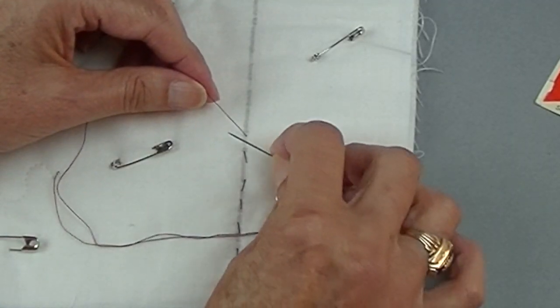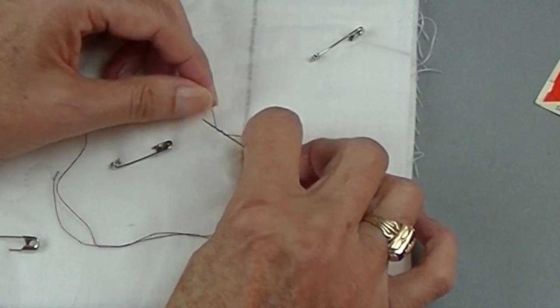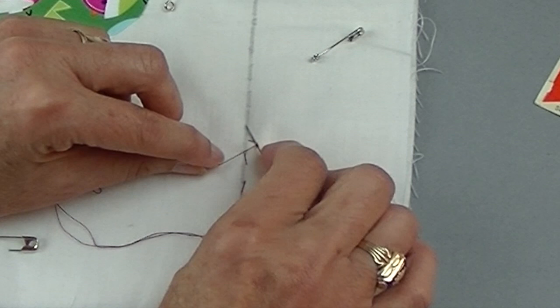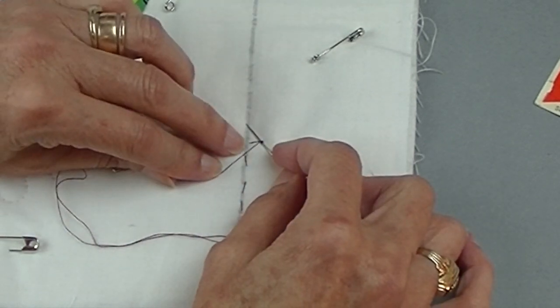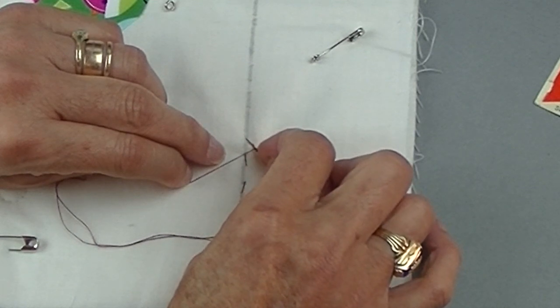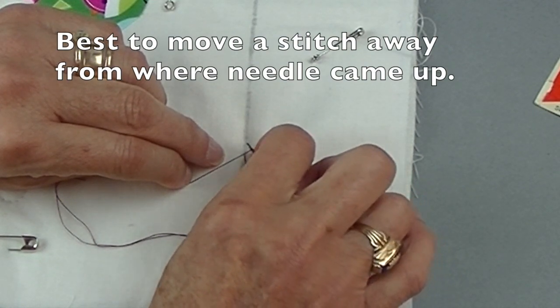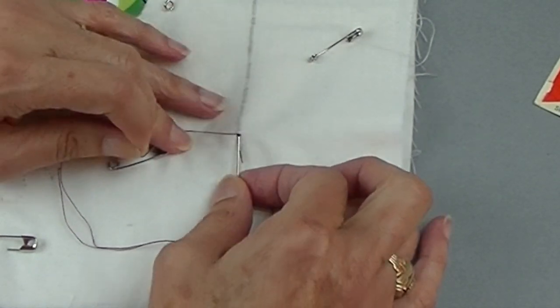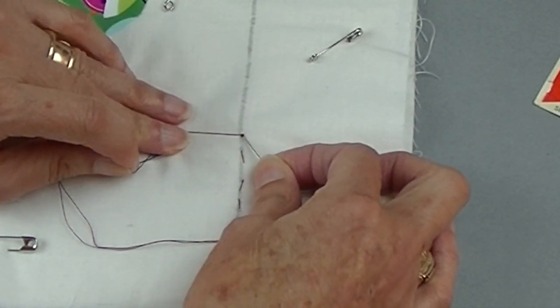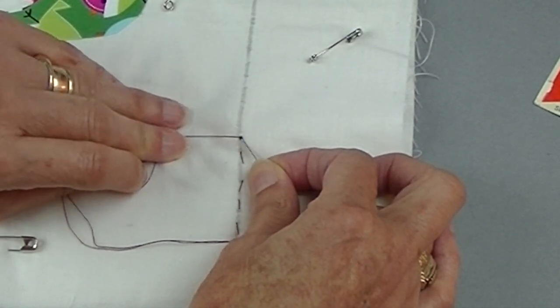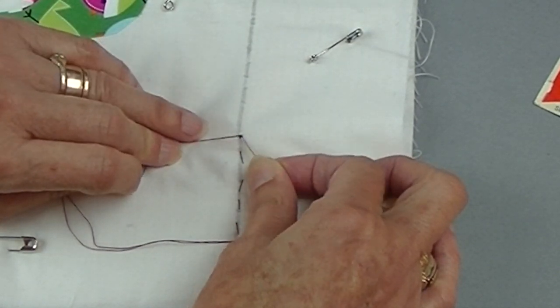So let me do that again. Again, you need to wrap the thread around your needle about three times. Make that sort of French knot. And then I'm going to go down right next to that stitch. Let me go in here. I'm going to hold onto this thread. And then I'm going to take my needle and sort of travel through the inside of this quilt.